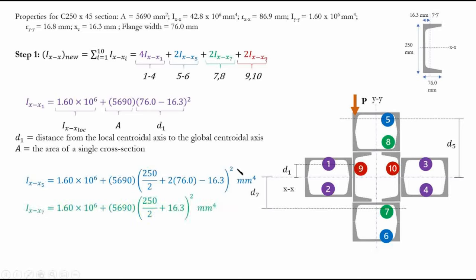For IXX9, the parallel axis theorem does not apply because the local centroid and global centroid are on the same line — the distance is zero. In this case, the channel orientation matches exactly, so we use 42.8×10⁶ directly. For channels 5, 6, 7, and 8, because the channel is inverted we use 1.60×10⁶; but for channel 9, we use the IXX value of 42.8×10⁶.